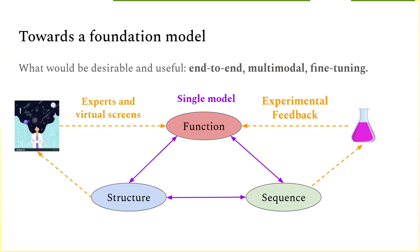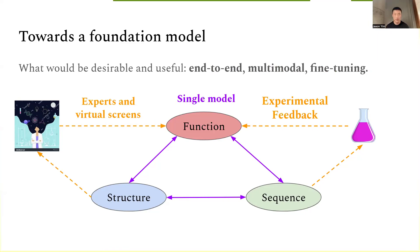Drawing inspiration from natural language and vision models, the goal is to work toward a foundation model that connects everything end-to-end, so signals can flow between all modalities — function, structure, and sequence — and fine-tuning can happen jointly. Fine-tuning here is unique because feedback comes from wet lab experiments, human experts, and virtual screening methods like AlphaFold2. Instead of three separate neural networks for each modality, the aim is a single model that encapsulates everything.